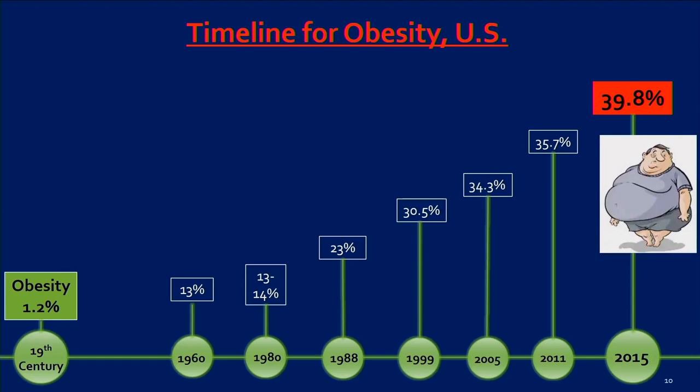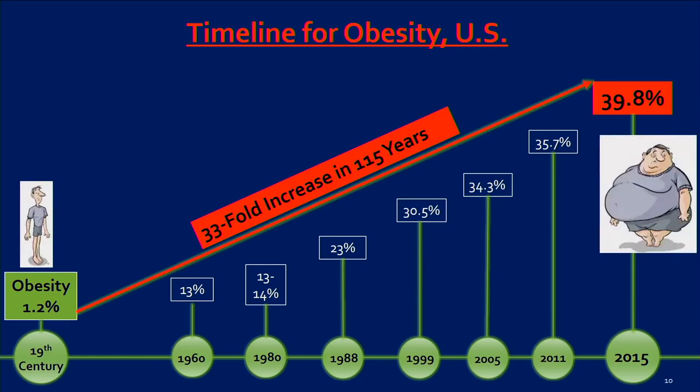Obesity: we know from the 19th century, from studies in prisoners in Nebraska and Texas, obesity was 1.2% in men aged 18 to 80. It rises: by 1960, we're at 13%. By 1988, 23%. By 2015, 39.8%. So over a period of roughly 115 years, obesity is up around 33-fold.